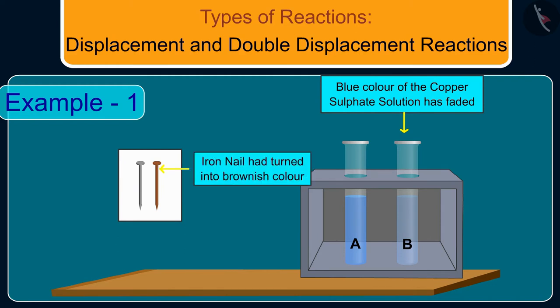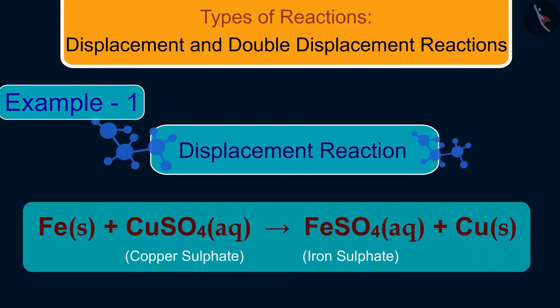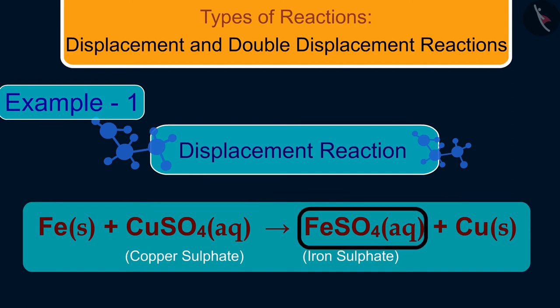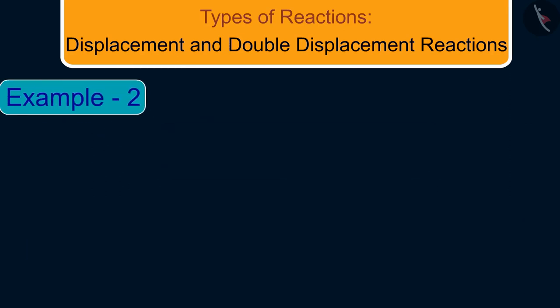We can observe that the blue color of the copper sulfate solution has faded and the iron nail has turned brownish. The reaction that took place was: iron reacted with copper sulfate solution. Since iron is more reactive than copper, it displaced the copper from copper sulfate and formed iron sulfate and copper. This reaction is known as a displacement reaction.